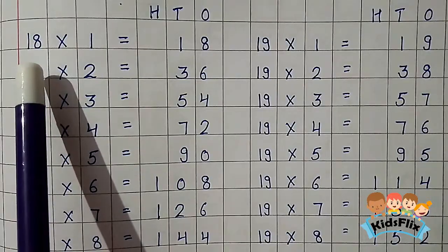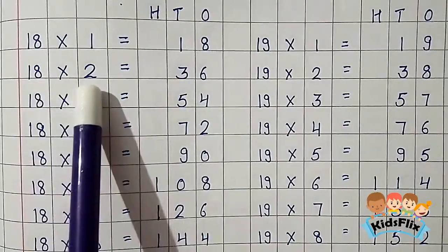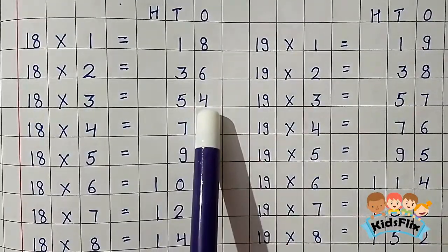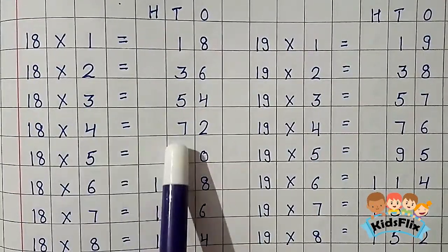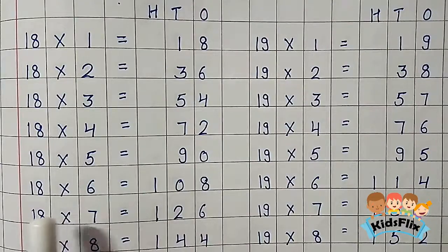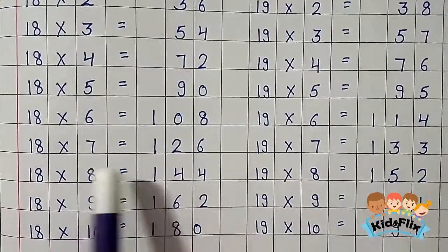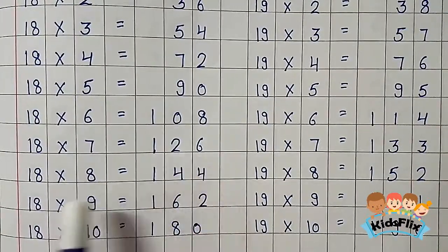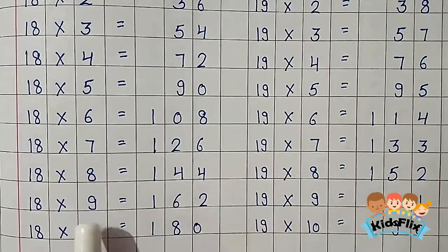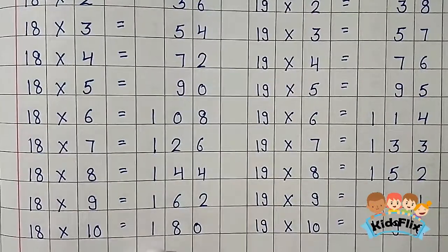Now the table of 18. 18 1s are 18. 18 2s are 36. 18 3s are 54. 18 4s are 72. 18 5s are 90. 18 6s are 108. 18 7s are 126. 18 8s are 144. 18 9s are 162. 18 10s are 180.